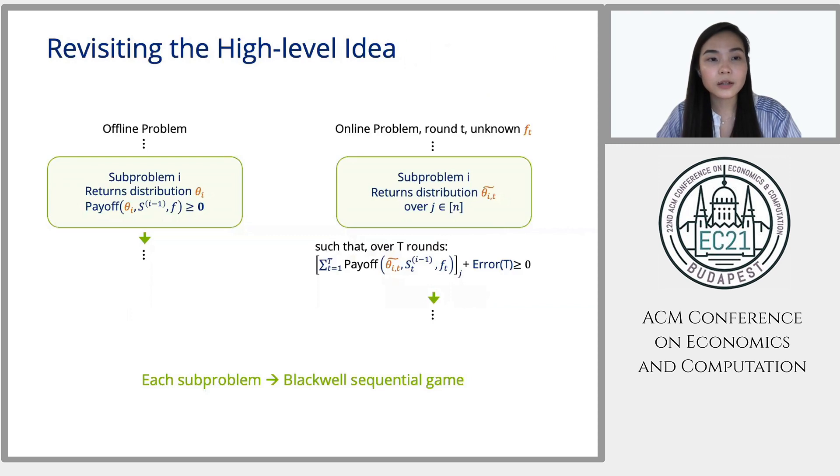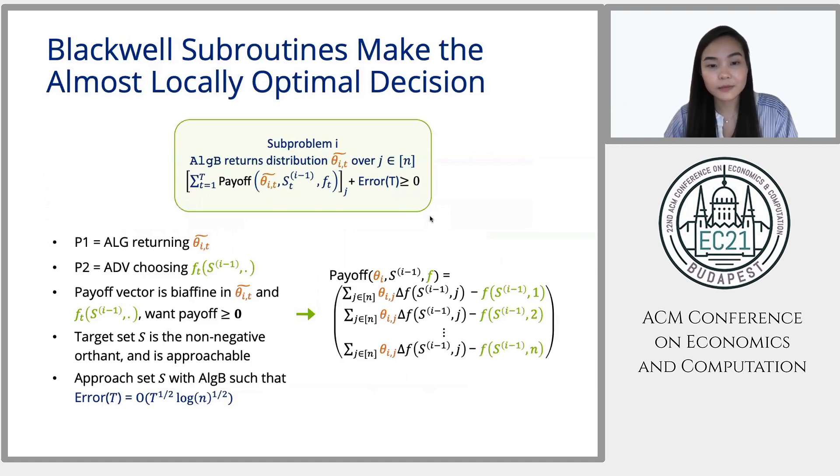Now, we will utilize ALC of b in designing our subroutine. So if we revisit the high-level idea, we replace the greedy step with a subroutine such that over t rounds, error of t would be square root of t. Now, to do so, we let ALC of b handle each subproblem. So we have one ALC of b instance for each subproblem. We can think of each subproblem as a Blackwell game where player one is our algorithm and player two is nature, giving us the delta f function. And the reward vector is then the payoff function here. And because we want our payoff to be non-negative, we set our target set to be the non-negative orthant, and we want it to be approachable. And if s is one-round approachable, then we can use ALC b from before such that error of t grows like square root of t. And that's what we want.